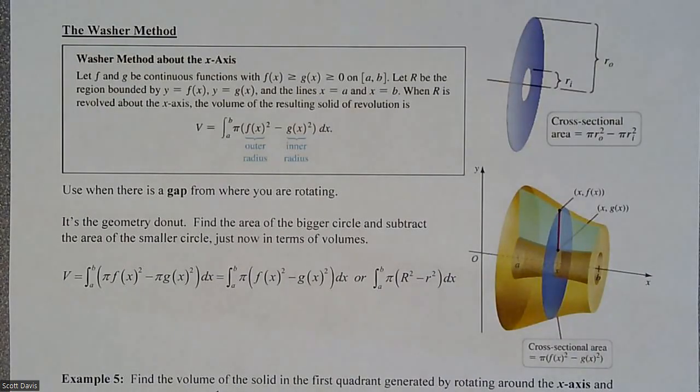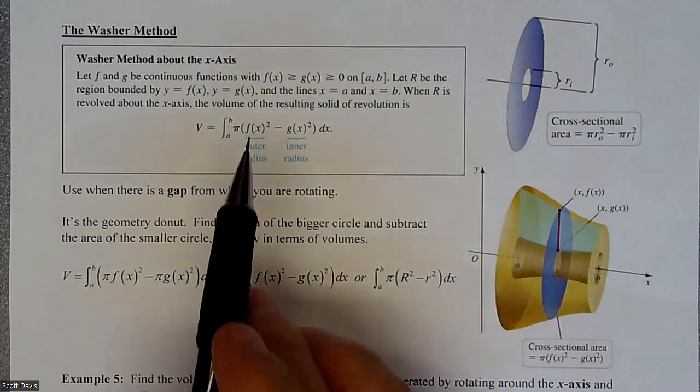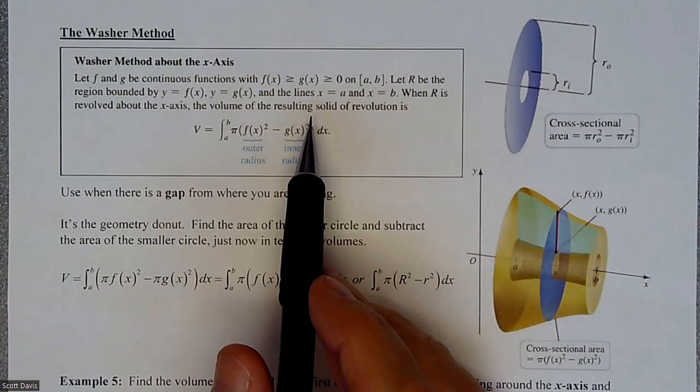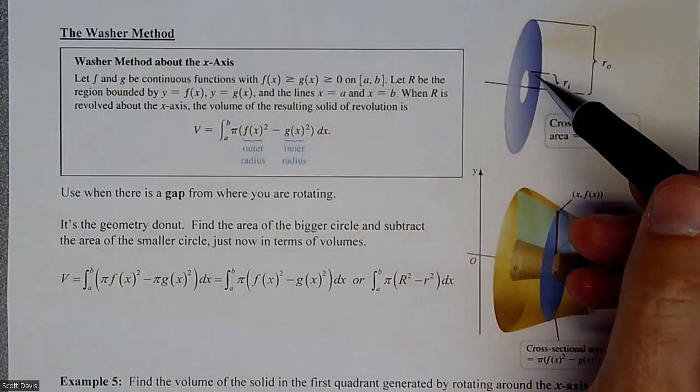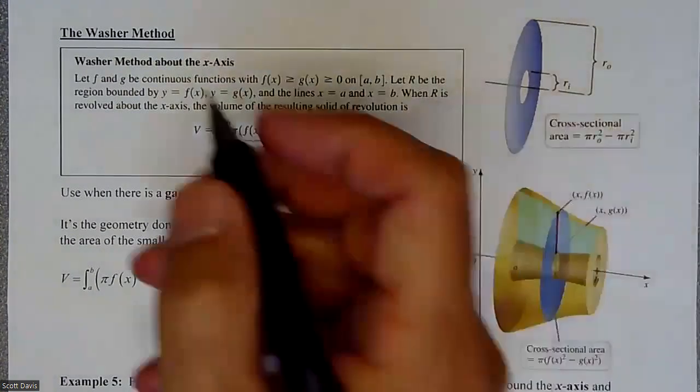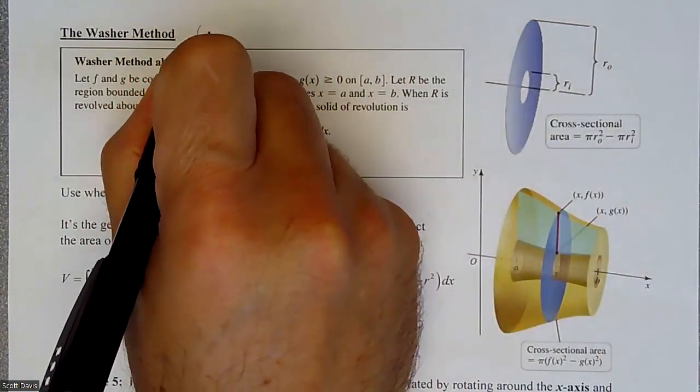In this video we're going to be talking about the washer method. We have different situations for finding volumes when rotating around axes, and we have a piece that gets cut out. We have to think of it as the old donut type of thing.